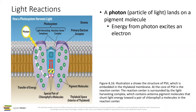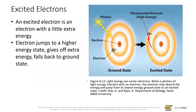Let's look at this photosystem that is embedded in the thylakoid membrane. Remember, now we're inside the chloroplast. A photon, which is a particle of light with energy - remember, light has energy depending on the wavelength - is going to land on a pigment molecule embedded in this protein complex in the thylakoid membrane. When it does that, that energy actually excites an electron. Is the electron like jumping up and down in excitement? Actually, kind of.